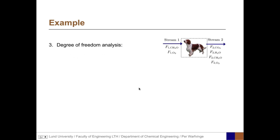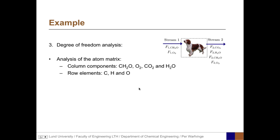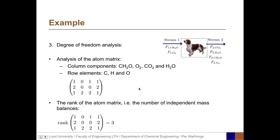We now make a degree of freedom analysis, starting with the atom matrix. The columns represent the components CH2O, O2, CO2, and H2O, and the rows represent the elements C, H, and O. The first column is 1, 2, 1 because CH2O contains one atom of C, two atoms of H, and one atom of O. The rank of the atom matrix — that is, the number of independent mass balances we can use — is three.